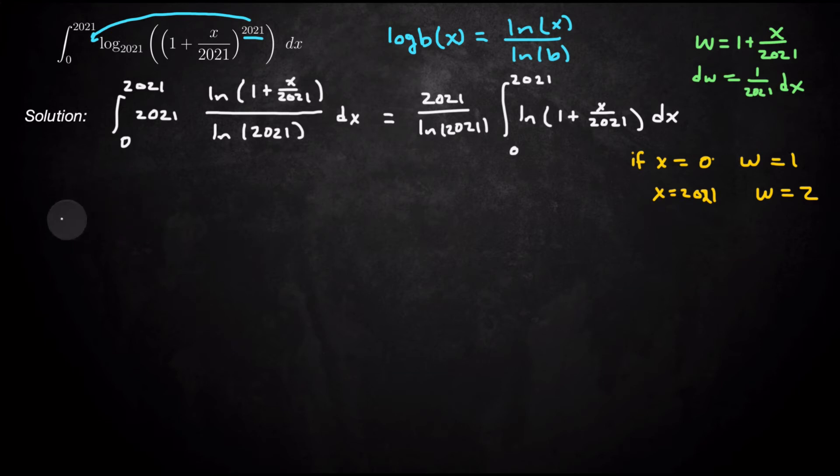So we get the integral 2021 over natural log of 2021. So integral from 1 to 2, natural log of w. Well, dx, I actually have a 2021 here. So let me put 2021 dw.